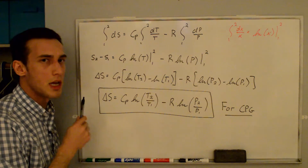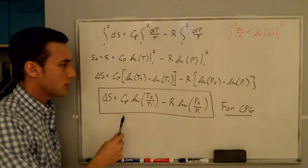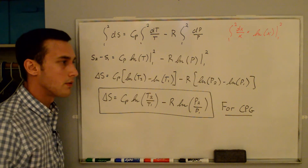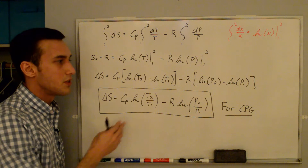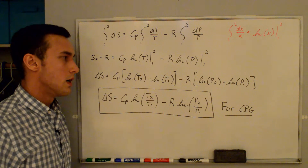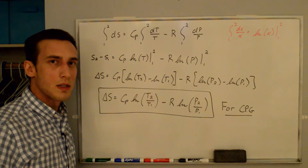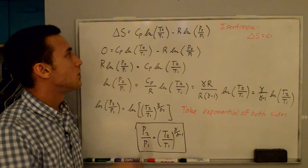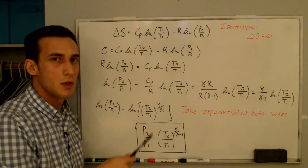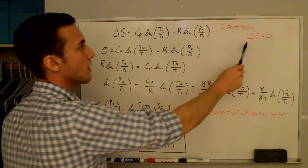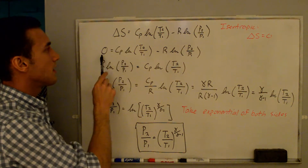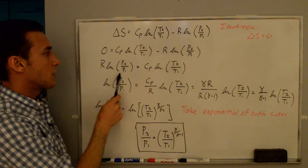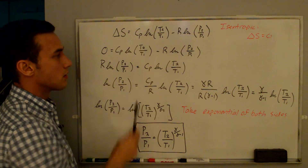This equation gives the change in entropy between two states, and it is valid for a calorically perfect gas with constant specific heats. For the isentropic process, delta s equals zero. Setting that to zero and adding R·ln(p2/p1) to both sides, then dividing both sides by R, we get ln(p2/p1) equals cp/R times ln(T2/T1).